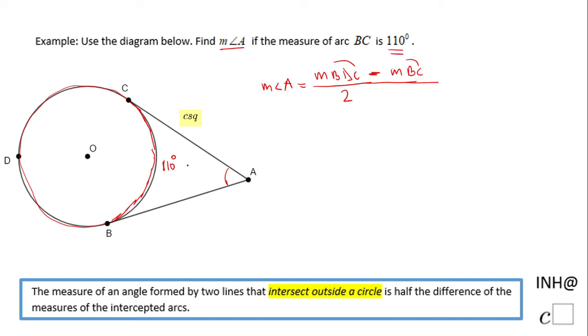We need to find the measure of arc BDC. The measure of arc BDC plus the measure of arc BC will equal 360 degrees because they give us the whole circle.